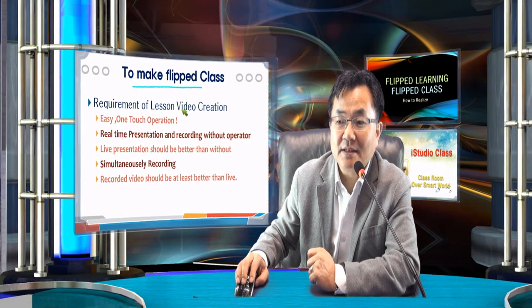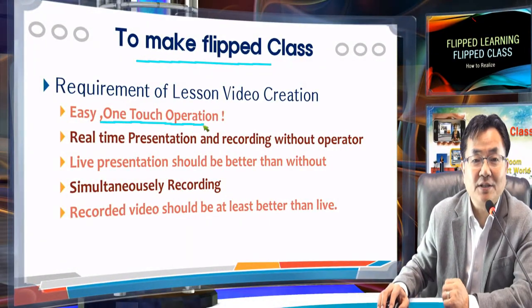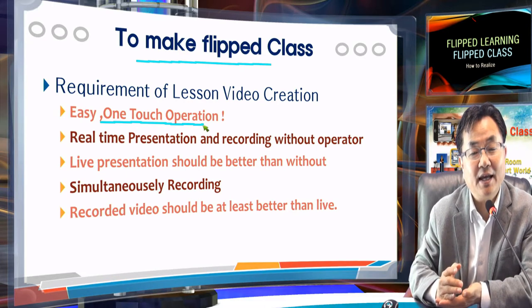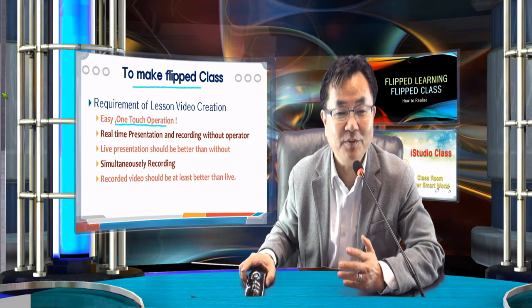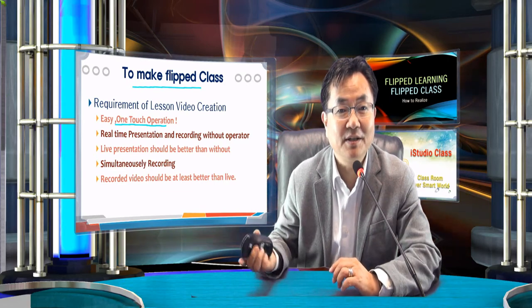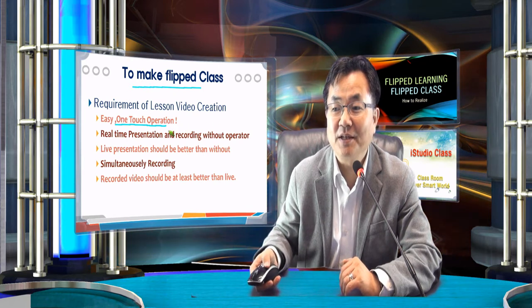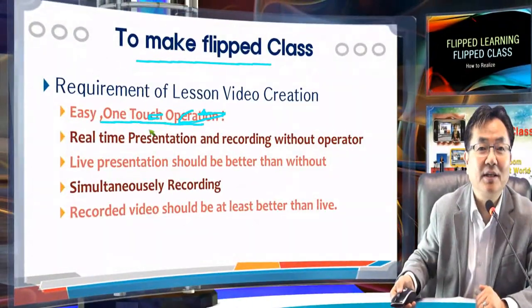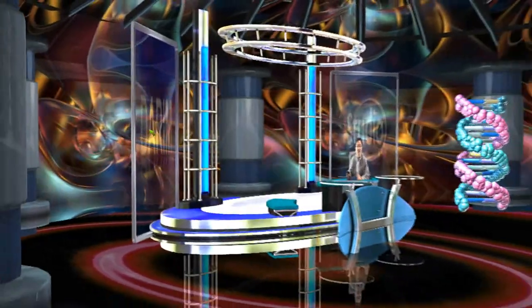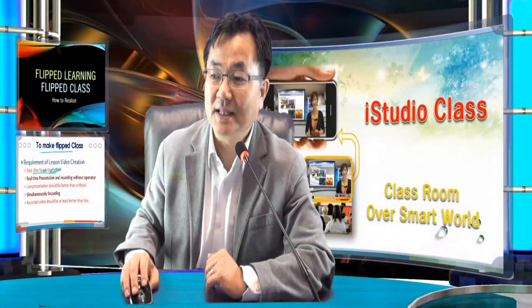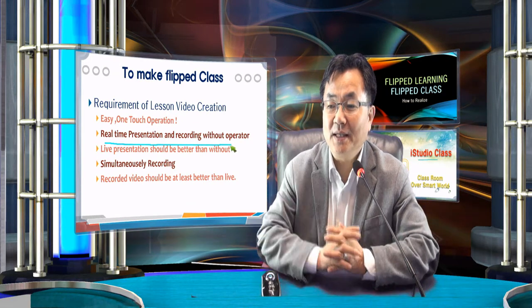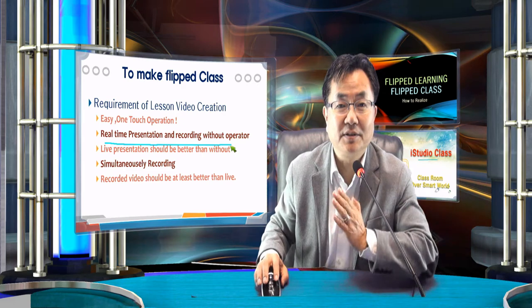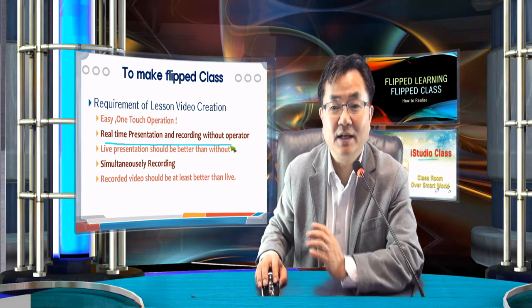To make a flipped class, the most important thing is very simple one-touch operation for teachers, so the teacher can operate everything and do a live presentation. All the devices here have no control surface except a pointer device and mouse. With the mouse you can draw something and change things - zoom in, go left - all this operation is easy enough to make a real-time classroom presentation. This device must handle real-time presenting and recording without an operator.